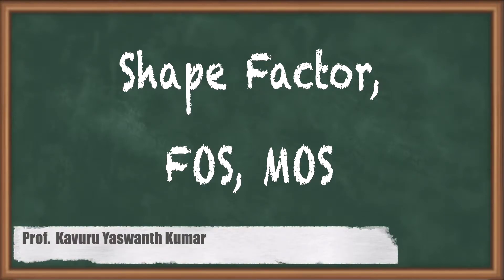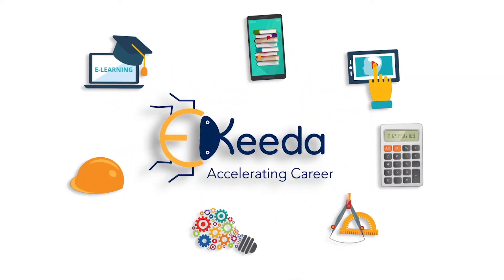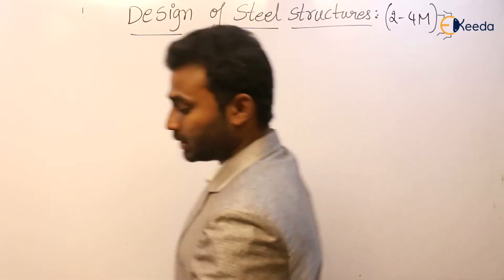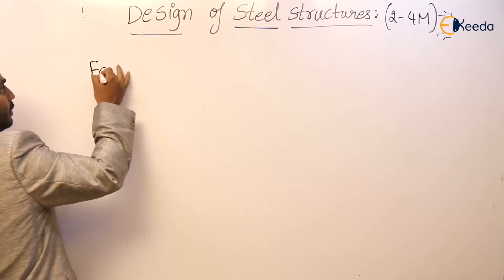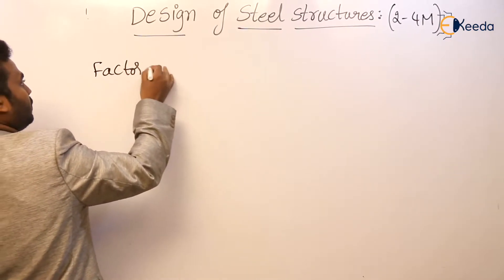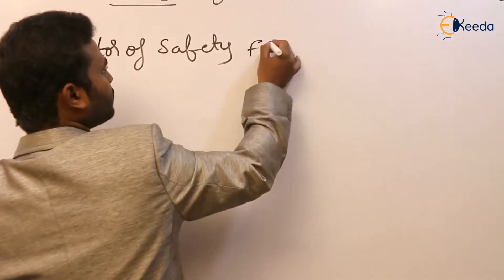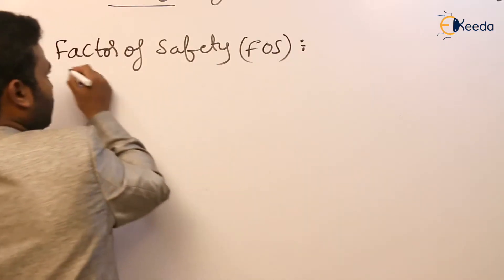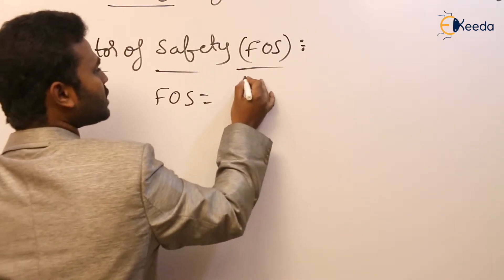Hello everyone. In this video we are going to discuss some terms like shape factor, factor of safety, and margin of safety. Now let us see some definitions. Factor of safety is represented as FOS. Factor of safety is the ratio of yield stress to the working stress.